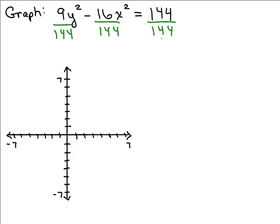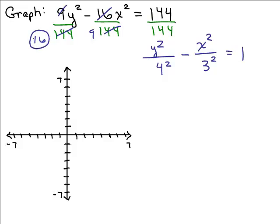So our first thing to do will be to divide everything by 144 so that we're going to have it equal to 1. And it's kind of convenient here. I gave you a problem where 9 times 16 was 144. So when I cancel here, you end up get 16 in the denominator here. We end up get 9 in the denominator here. So I could write this as y squared over 16 or y squared over 4 squared minus x squared over 9, which I could write as 3 squared equals 1.